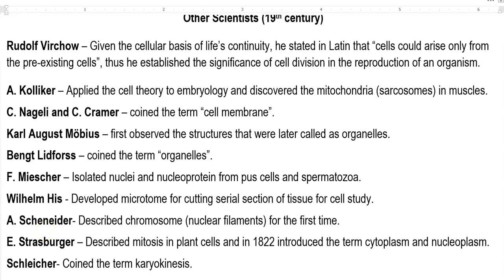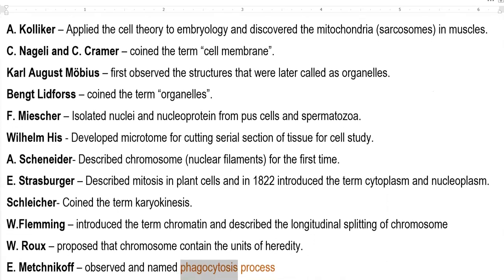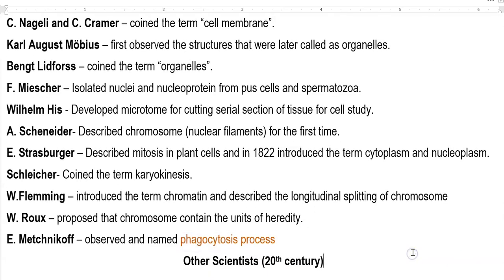The next contribution is by Strasburger. He described mitosis in plant cells, and in 1822, he introduced the two terms 'cytoplasm' and 'nucleoplasm,' referring to the liquid or gel-like portions present in the cell. Cytoplasm is the substance in which various organelles such as mitochondria and endoplasmic reticulum are housed. Analogously, the jelly-like or liquid substance present inside the nucleus is referred to as nucleoplasm.